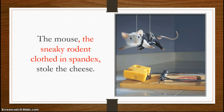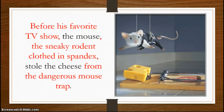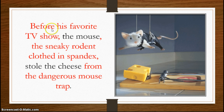And I can keep building out like this. So now: 'the mouse, the sneaky rodent clothed in spandex' — there's my appositive phrase — 'stole the cheese from the dangerous mouse trap.' Now I have a prepositional phrase too. Where did he steal it from? He stole it from the dangerous mouse trap. And I can keep on building: 'Before his favorite TV show, the mouse, the sneaky rodent clothed in spandex, stole the cheese from the dangerous mouse trap.' That's another prepositional phrase — 'before his favorite TV show.' Again, no verb, so it can't be a clause. It's got to be a phrase.